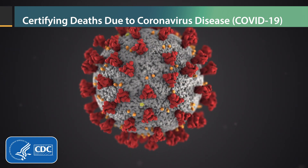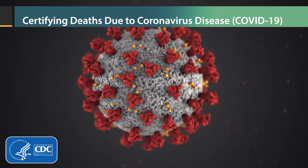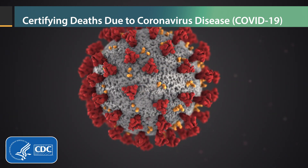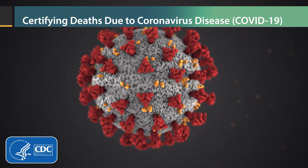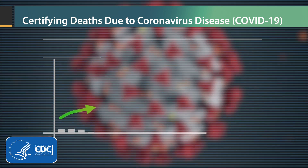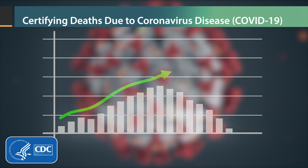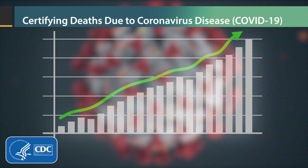In a public health emergency such as COVID-19, death certificate information is critical in measuring the pandemic's effects on the population and directing the appropriate public health response. Death certificates provide crucial data on causes of death and are used to document deaths resulting from this pandemic. This can only be done with complete and accurate cause of death reporting.